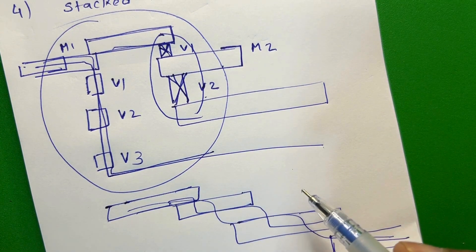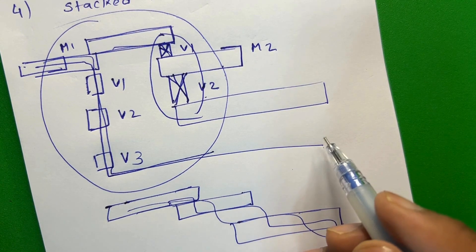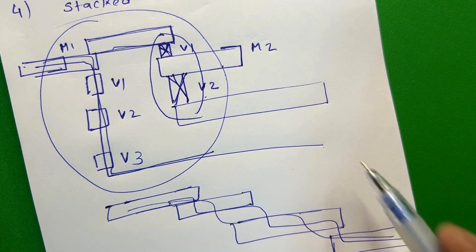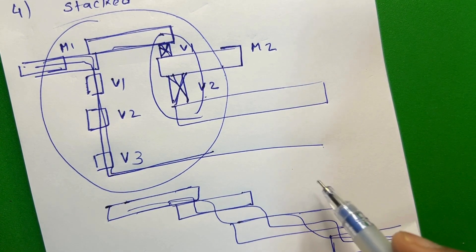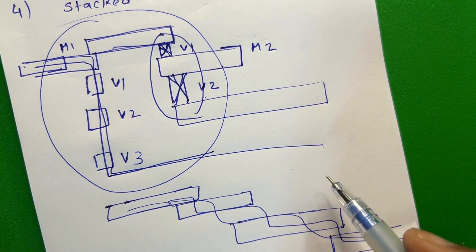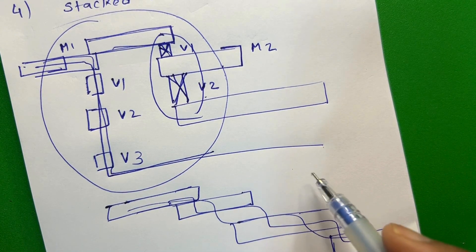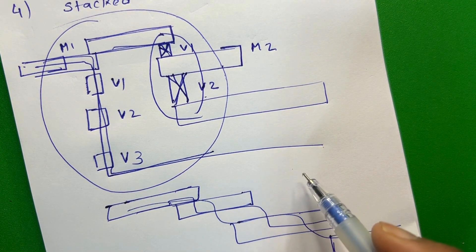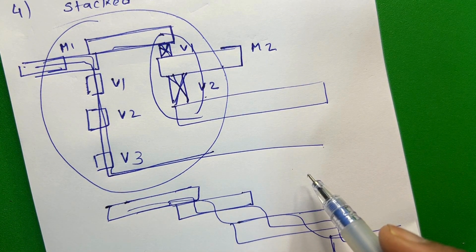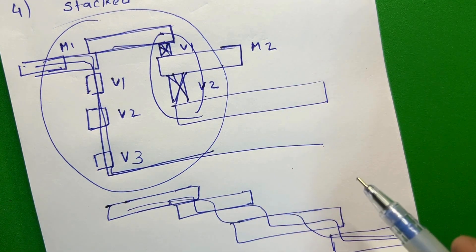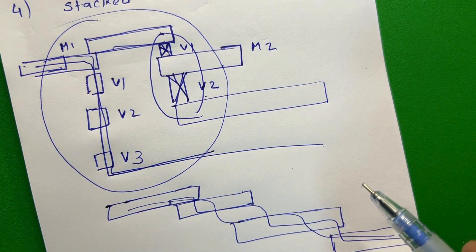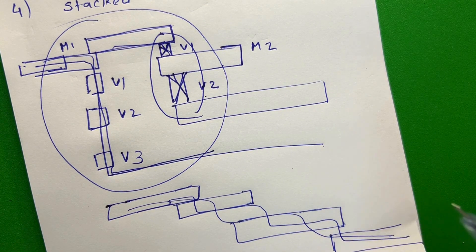So we have four types of wire: square wire, bar wire, large wire, and stacked wire. These are the wires we are using in our VLSI design. If you know any other wire type, please mention it in the comments. If you like this video, please subscribe to my channel. Thank you.